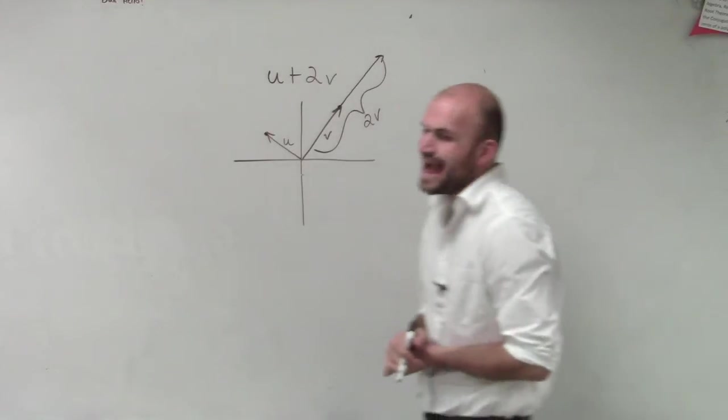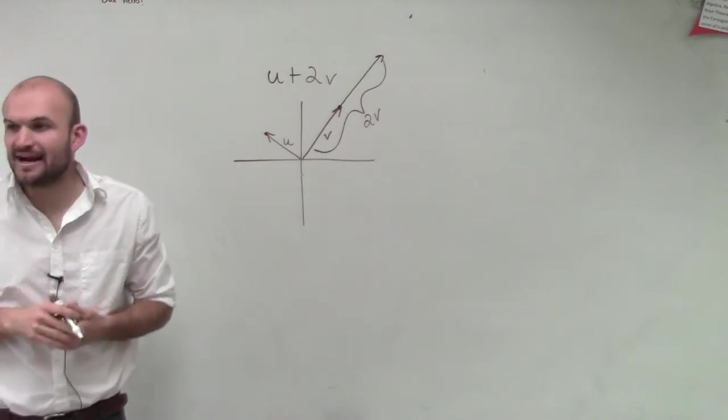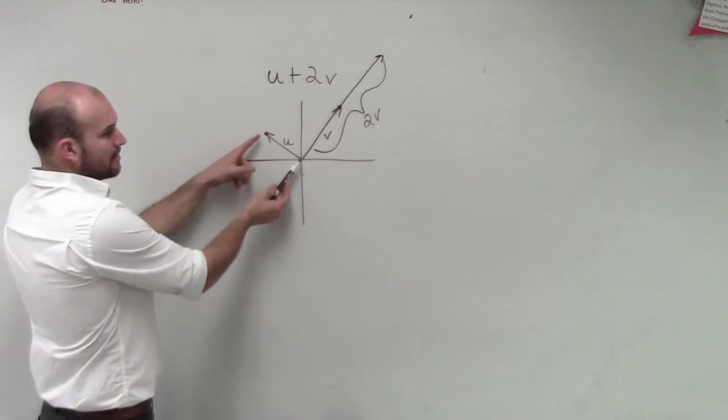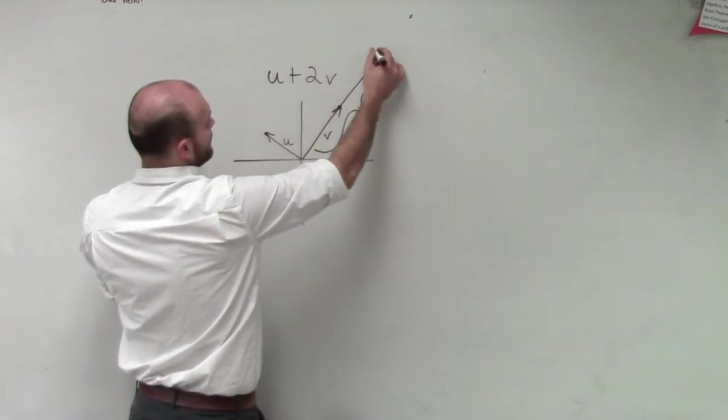Now we need to add u to it. So hopefully you guys remember, when we're adding our vectors, what we're going to do is we simply just take our vector u, and we add it to the tail end of our other vector.